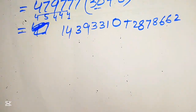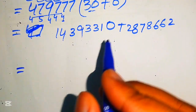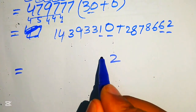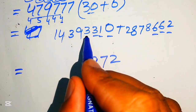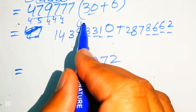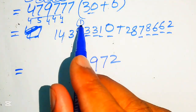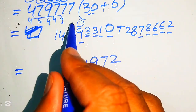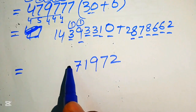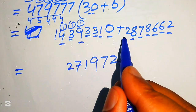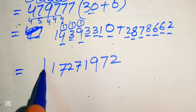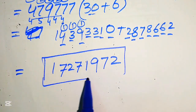Now we add the two partial products. Column by column: 0+2=2; 1+6=7; 3+6=9; 3+8=11 write 1 carry 1; 9+7=16 plus 1 = 17 write 7 carry 1; 3+8=11 plus 1 = 12 write 2 carry 1; 4+2=6 plus 1 = 7, and the leading 1. So the final answer is 60,466,212.